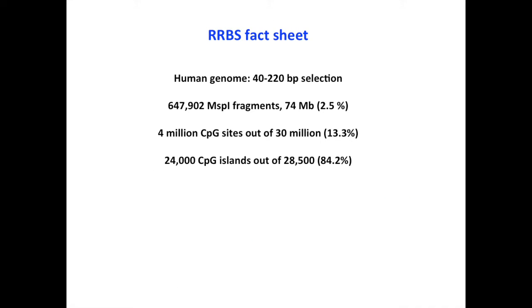Here is a small fact sheet of RRBS libraries. Selecting 40 to 220 bp gives you around 650,000 MspI fragments — only 7.4 megabases of the genome — yet you still recover 4 million CpG sites out of 13 million total, which is 14 percent. More importantly, you get 4,000 CpG islands, representing a massive enrichment. That's the whole point: sequence less but get a lot out of it.